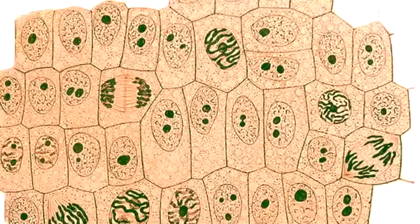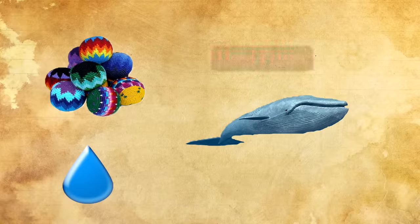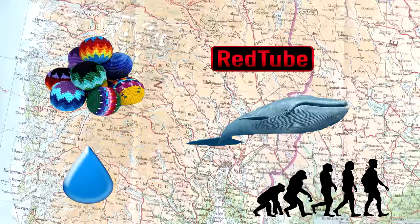Up some more, and we get to cells, some top favorites including red blood, white blood, dendritic, and soft. The next level above that should be familiar. This is where we find raindrops, blue whales, hacky sacks, red tube, the human race, as well as Norway.